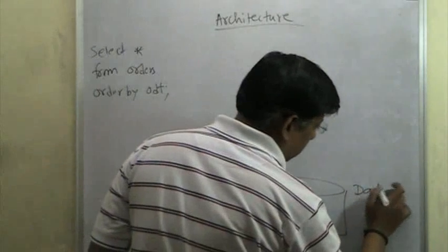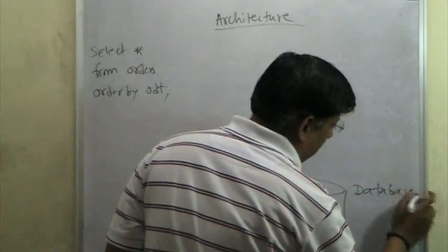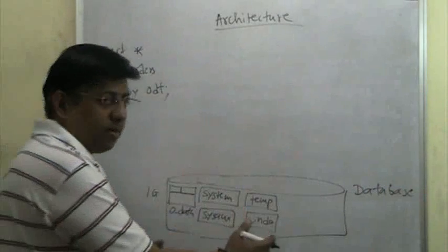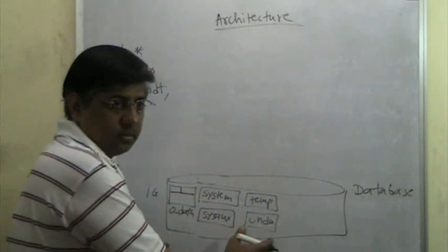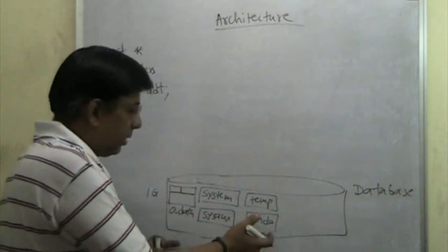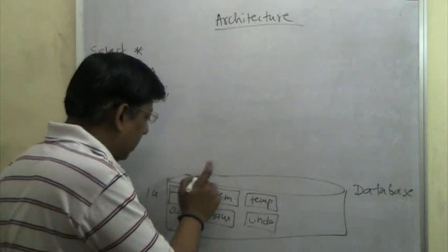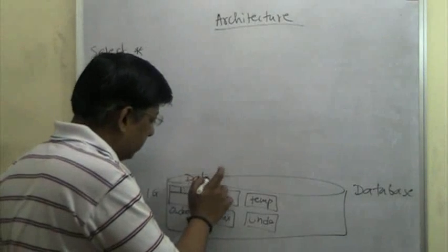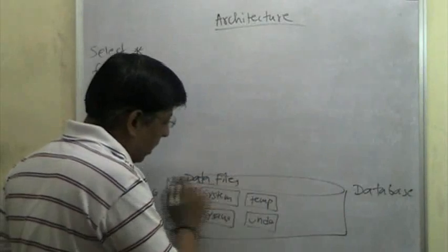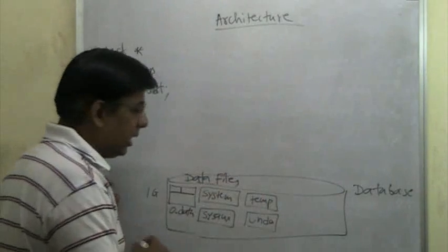Database, from the Oracle DBA point of view, is a collection of data files — which is nothing but a collection of tablespaces. So these are what I call data files. All these are data files. So a database is made up of data files.